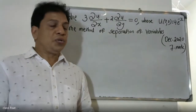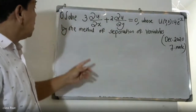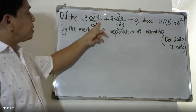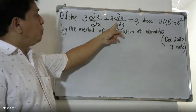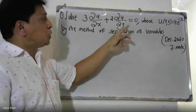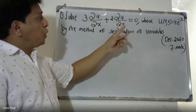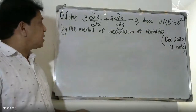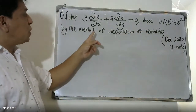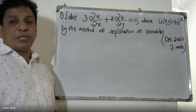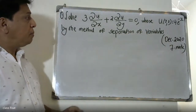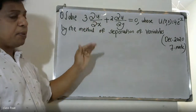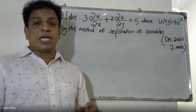Good morning, students. At the university, first day problem: solve 3·(∂u/∂x) + 2·(∂u/∂y) = 0, where u(x, 0) = 4·e^(−x), by the method of separation of variables. The method of separation of variables gives us the solution.